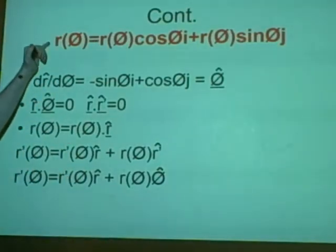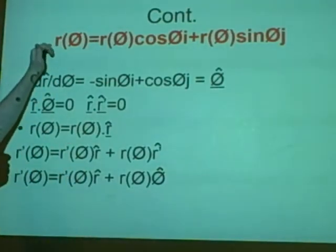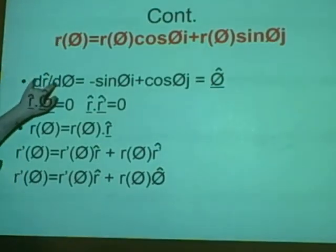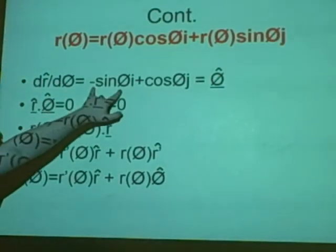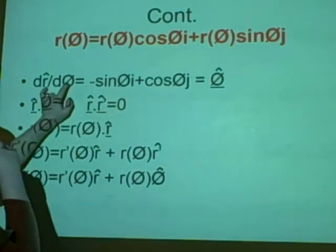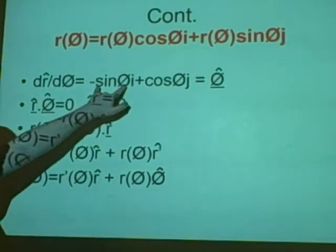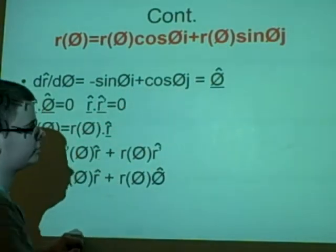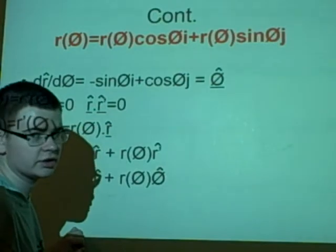Here is just a reminder of the last equation we were using, r of theta. If we were to differentiate it, we get this. We are differentiating r hat, so we get minus sine theta i plus cosine theta j. And if you remember, this is the same as theta hat.